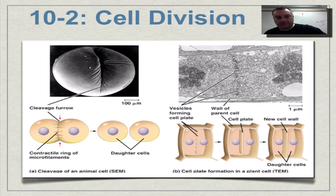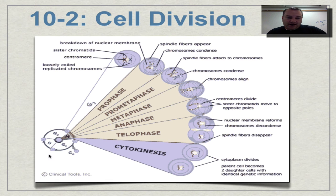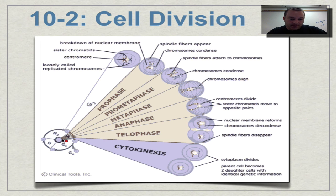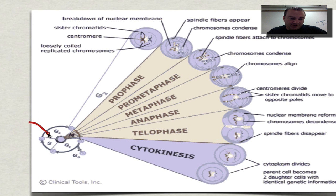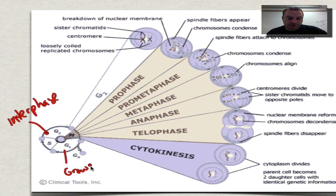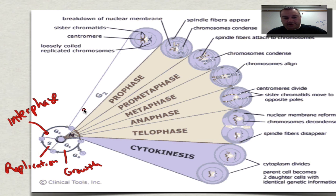Let's do a little bit of review. This graphic — remember, this is the cell cycle. Now, most of the cell cycle is going to be interphase. During interphase, you've got your gap one, which is growth — the cell is going to double its size. The S phase is replication of the DNA. And then in G2, you're preparing for mitosis.